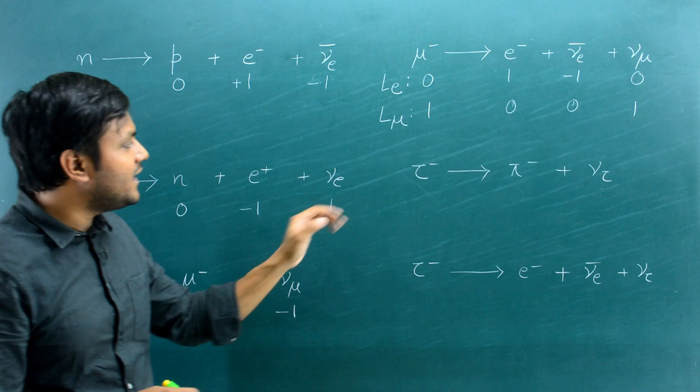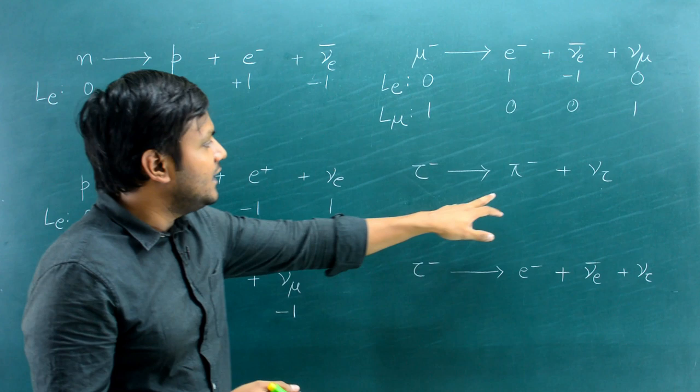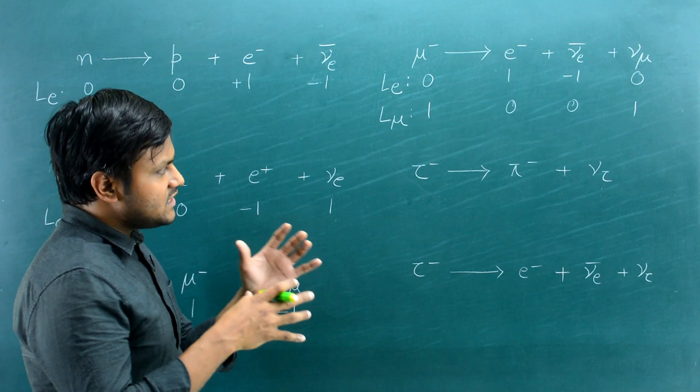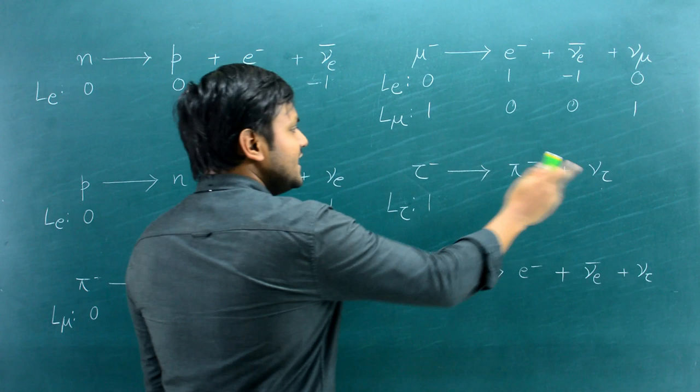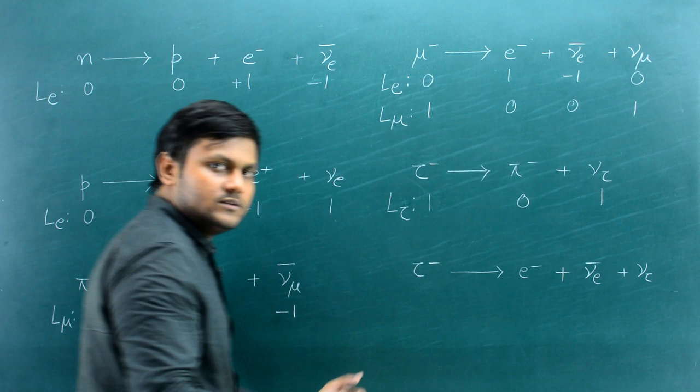The tau particle can decay into a pi meson and a tau neutrino. We look at the tau lepton number: tau particle = +1, pi meson = 0, tau neutrino = +1. Left-hand side: 1; right-hand side: 1. The tau lepton number is conserved.